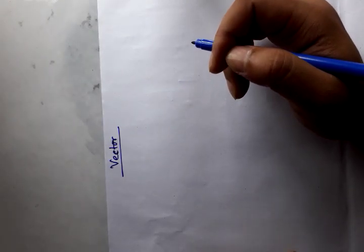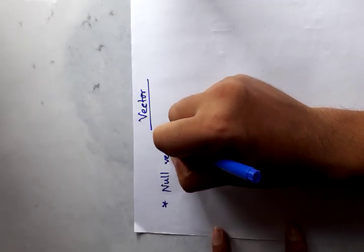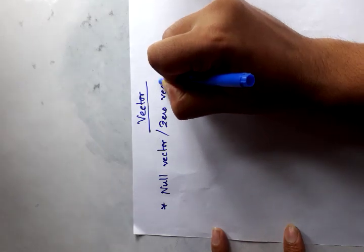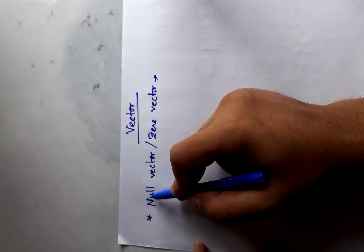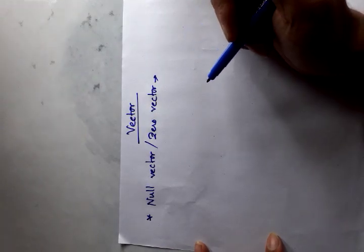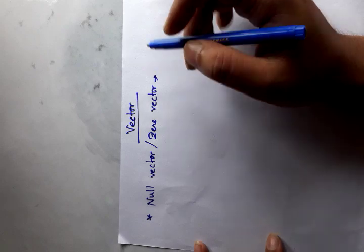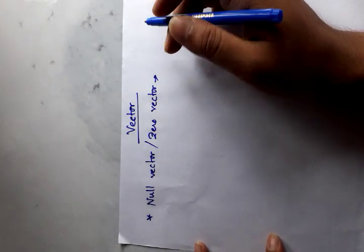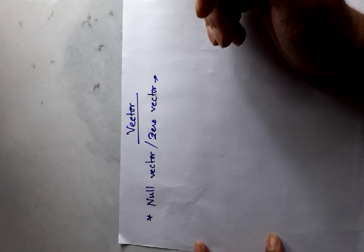I am going to discuss the types of vectors. First, Null Vector or Zero Vector. The vector which has magnitude 0 or null is called a Null Vector or Zero Vector. Its value is 0. The initial and final position of a Zero Vector always overlap, so its direction is arbitrary or not defined.